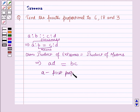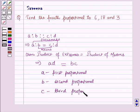b is called the second proportional, c is called the third proportional, and d is called the fourth proportional.